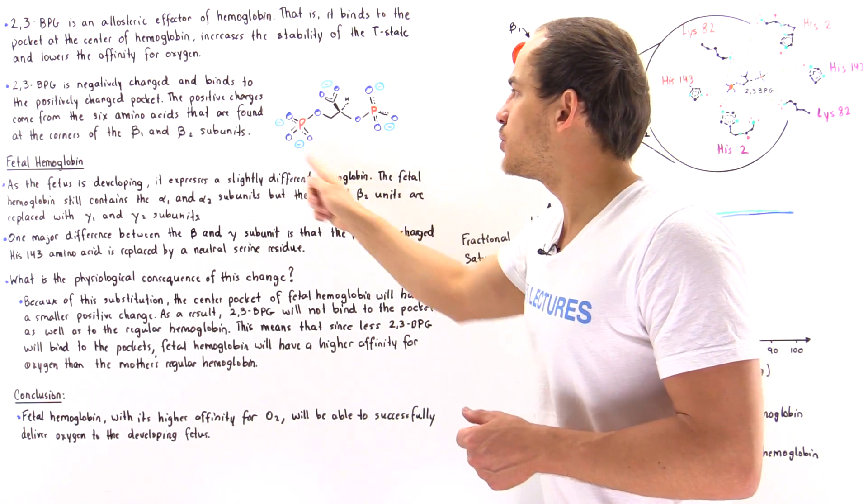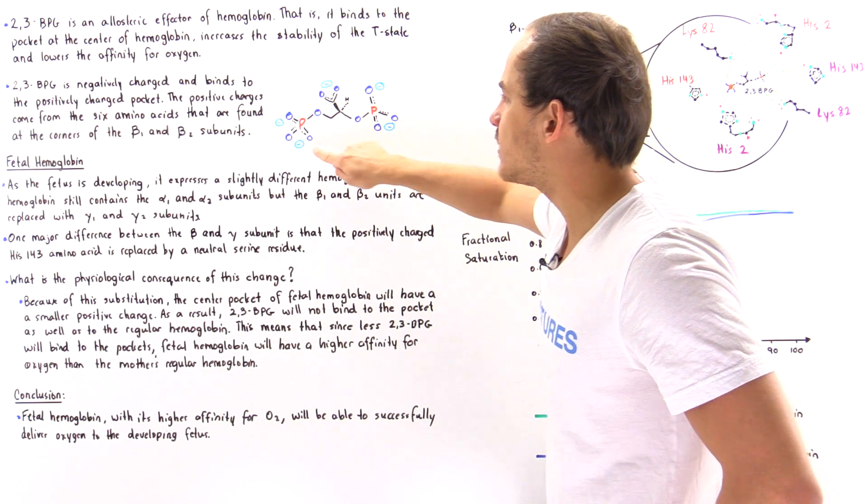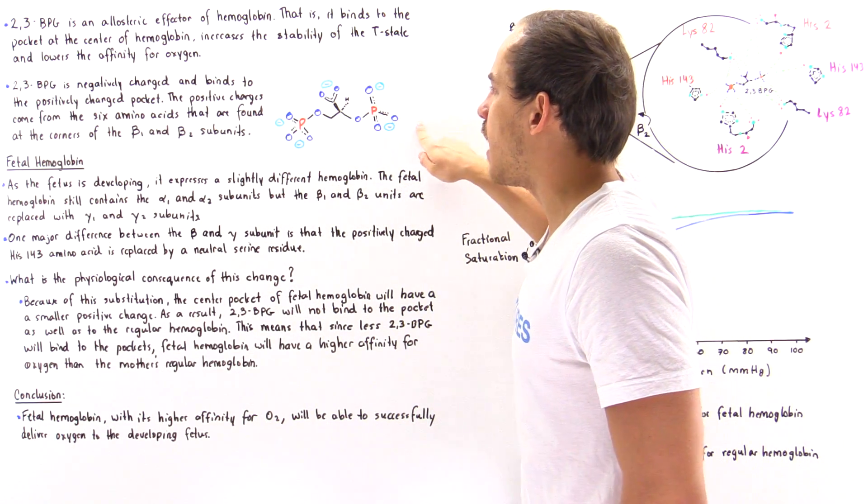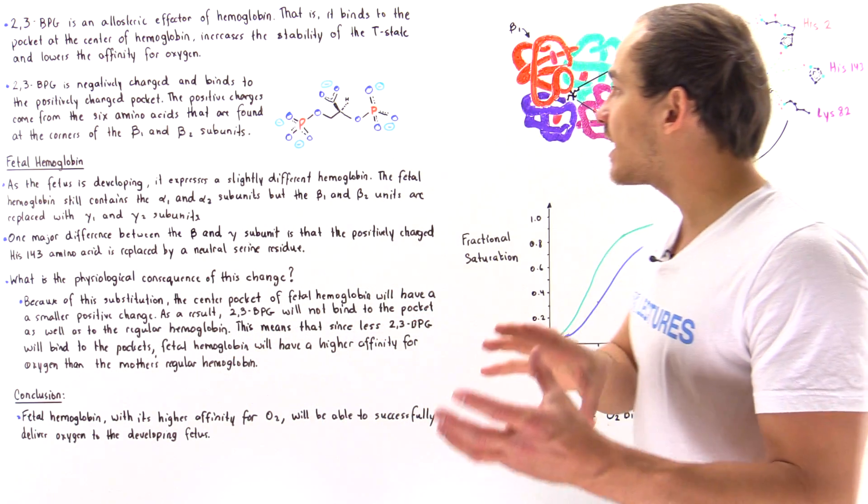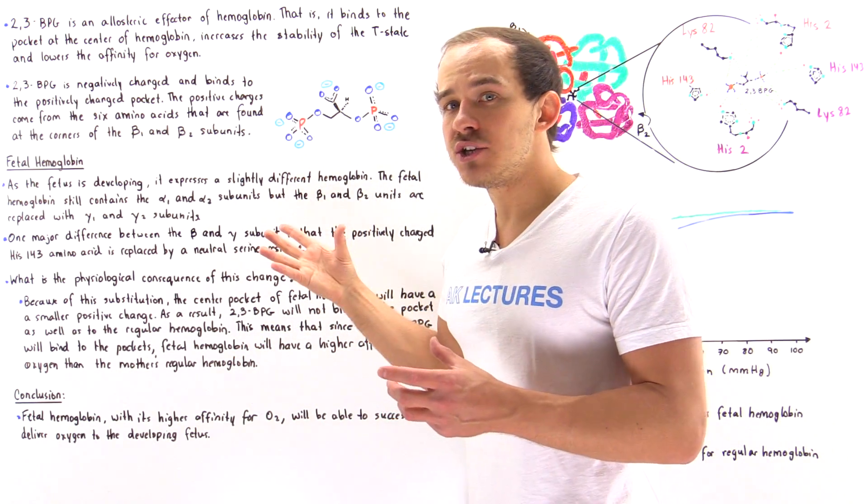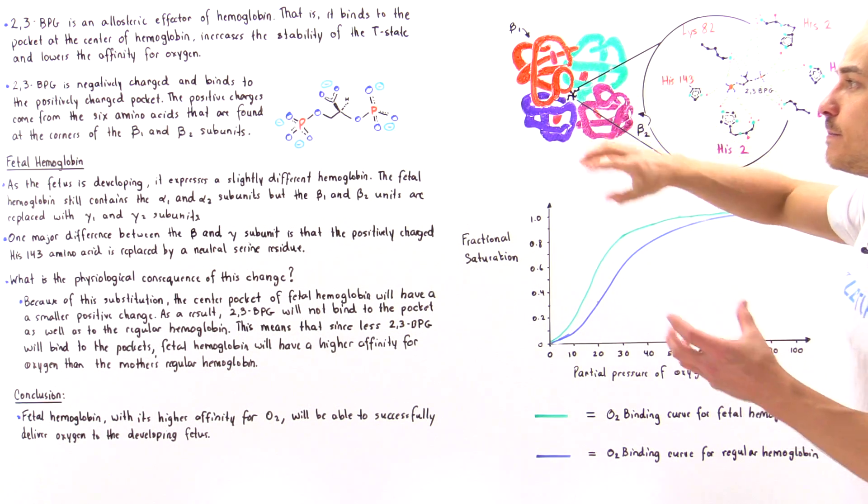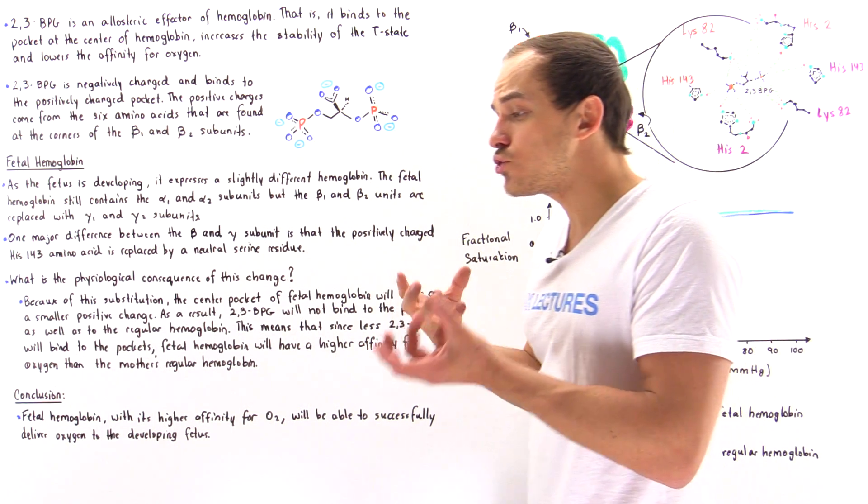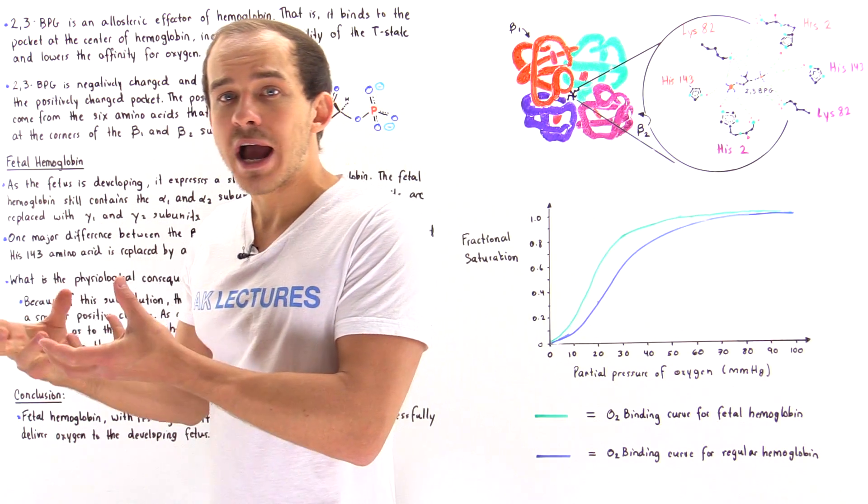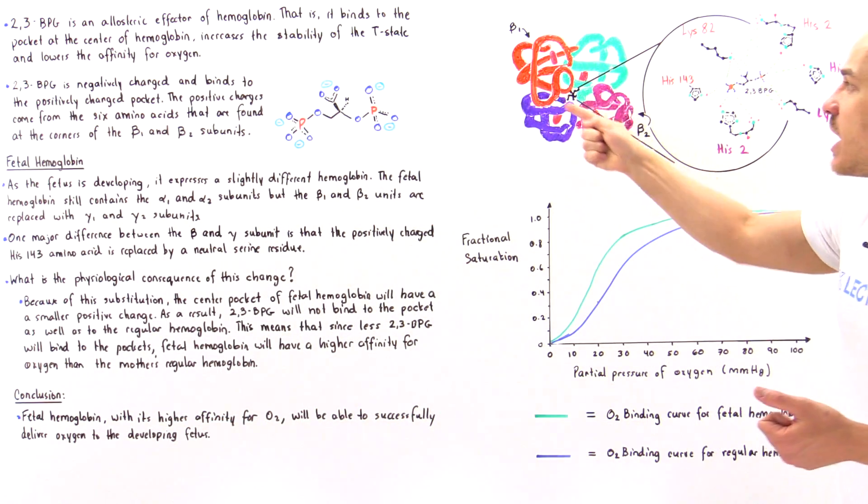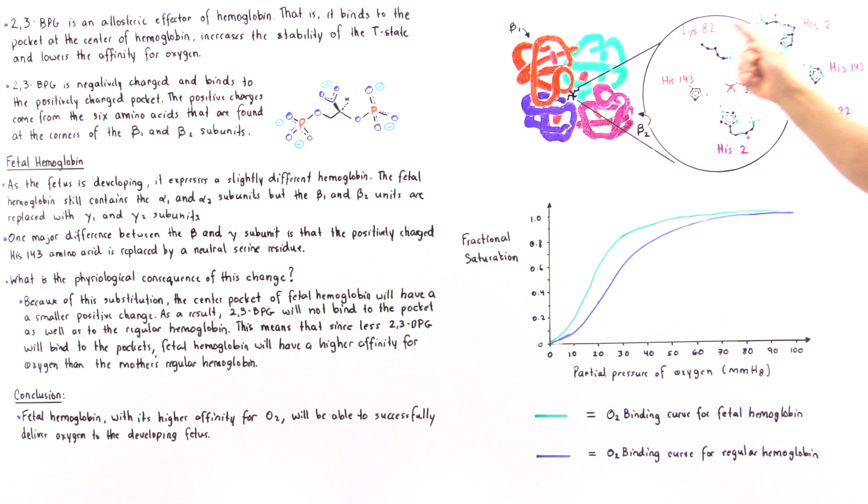This molecule, the 2,3-BPG, contains 1, 2, 3, 4, 5 negative charges. That's exactly why this molecule is able to bind at the center pocket, because there is a strong electrostatic attraction between these negative charges and the positive charges found along the following six amino acids. The 2,3-BPG molecule binds via electrostatic forces with these six amino acids.